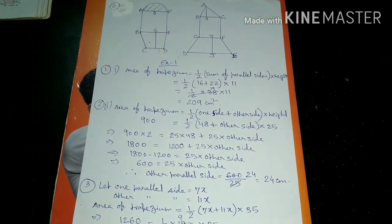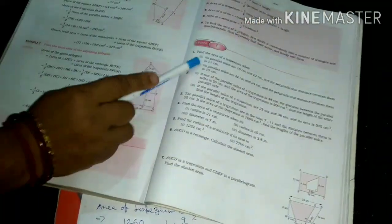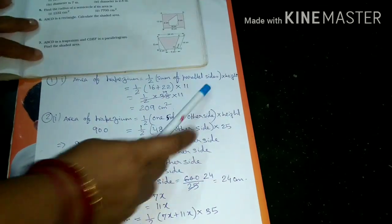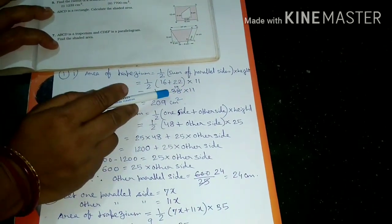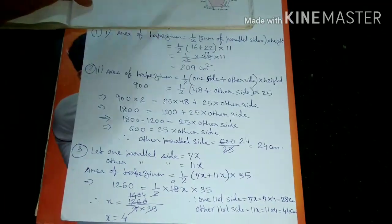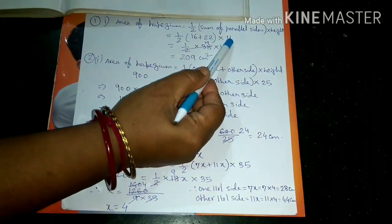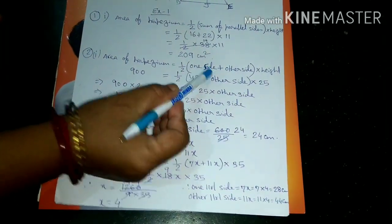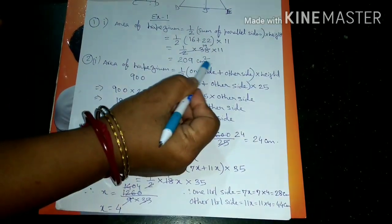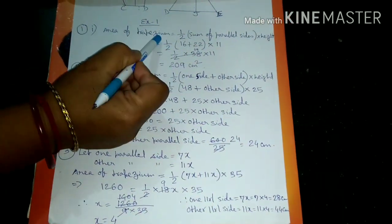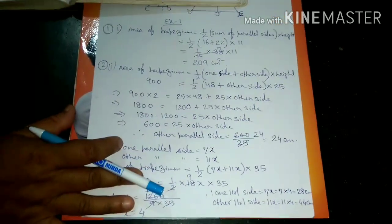Now we will start with exercise 1. In the first question, find the area of trapezium. The formula is half into sum of the parallel sides into height. The parallel sides given are 16 cm and 22 cm, and the perpendicular distance (height) given is 11 cm. So area = half into (16 + 22) into 11. Keep in mind: whenever we find the area, we should write the units — area units are in squares, so the answer will be in cm².